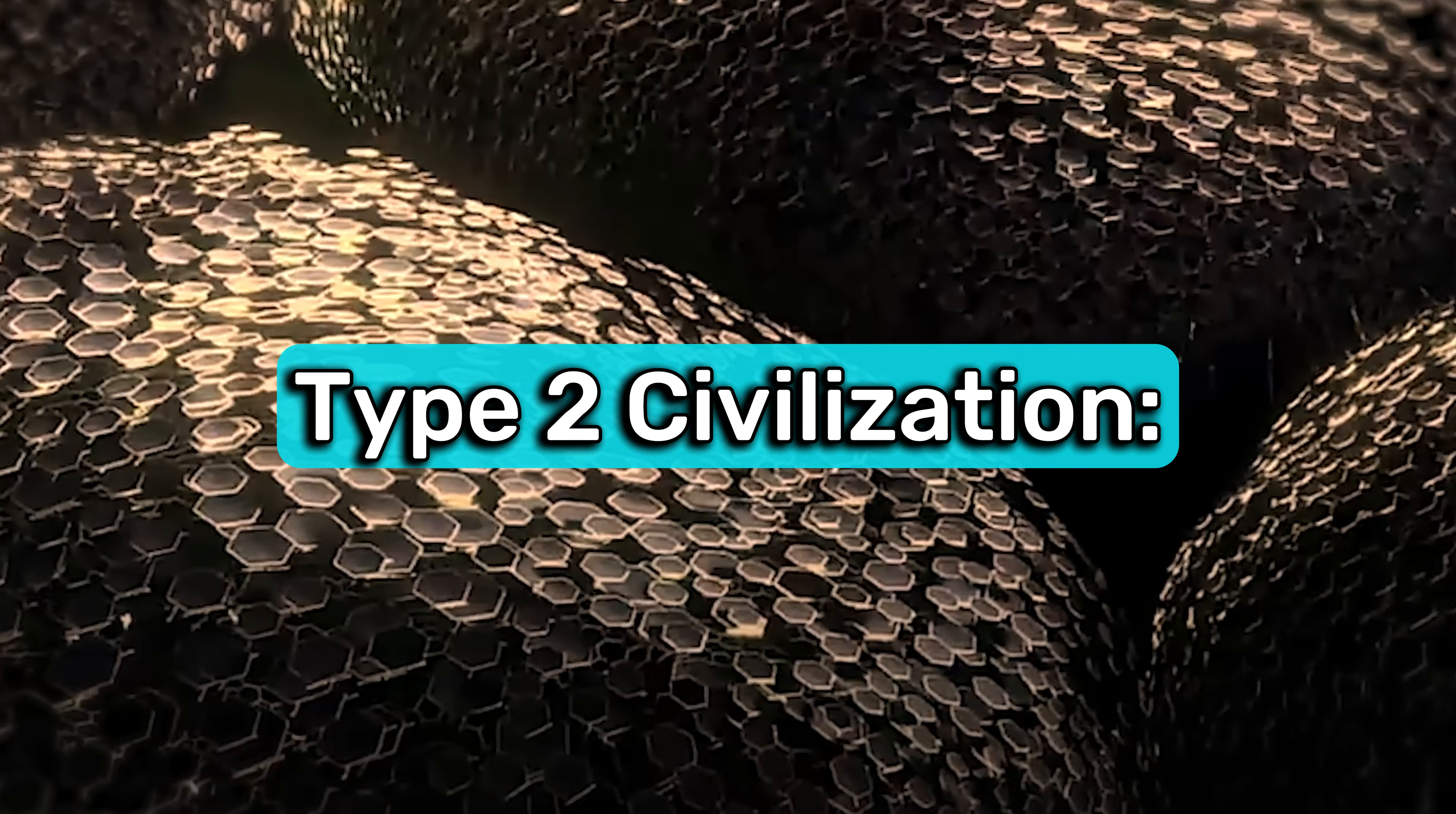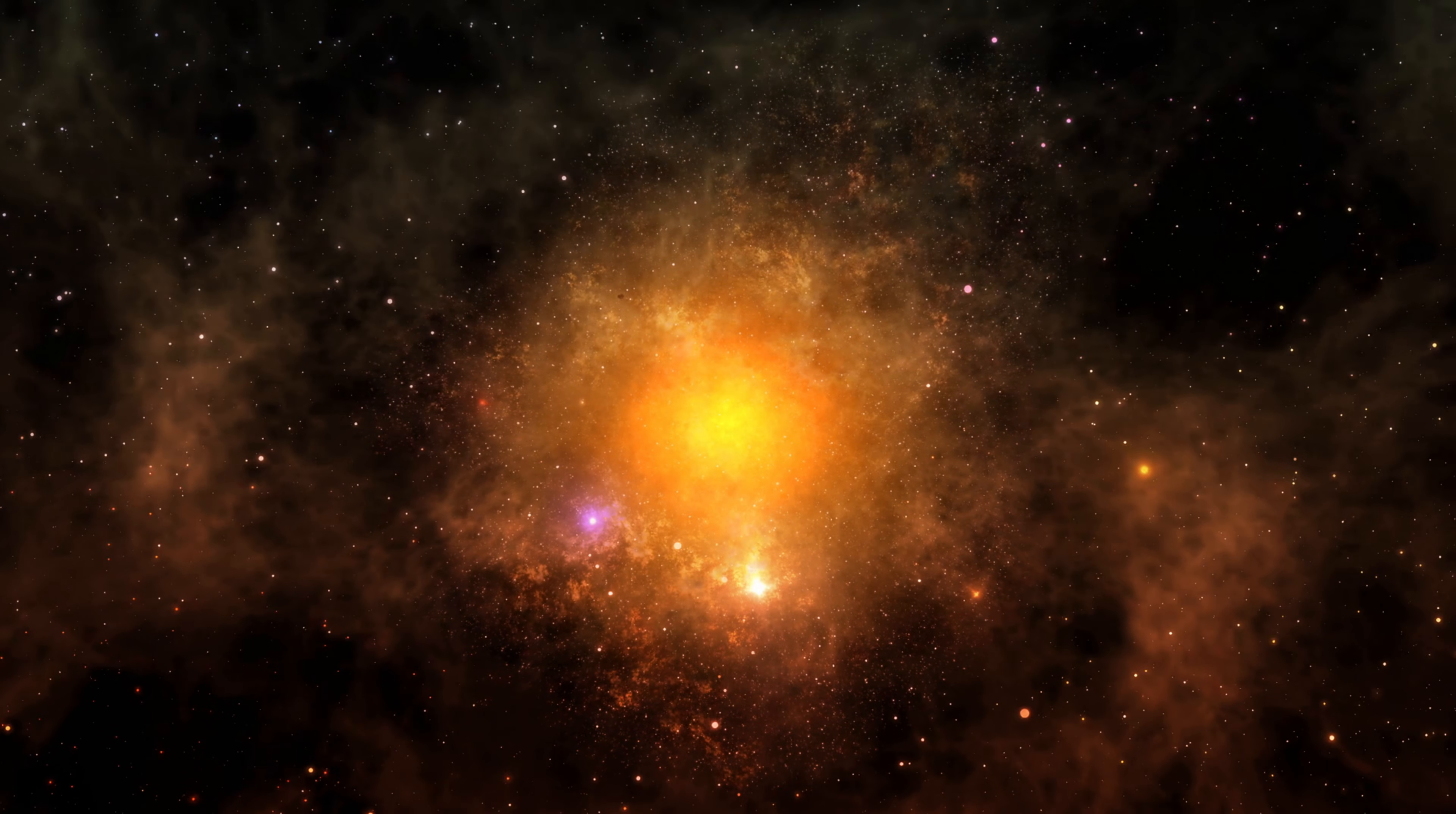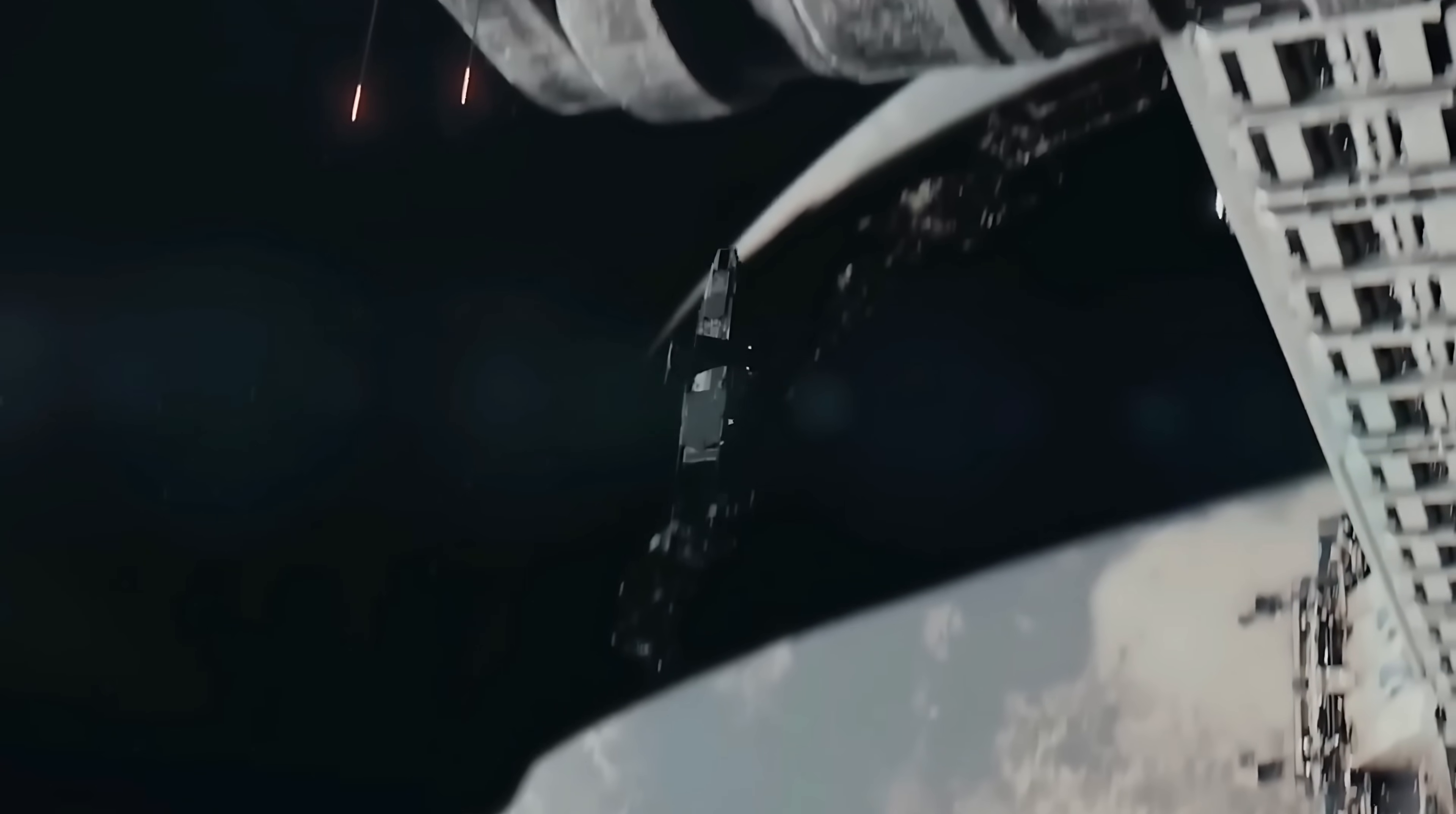Type 2 civilization. At this level, a civilization can capture the total energy output of its star. This might involve constructing megastructures like Dyson spheres to capture solar energy directly, vastly increasing energy availability and enabling significant technological progress.